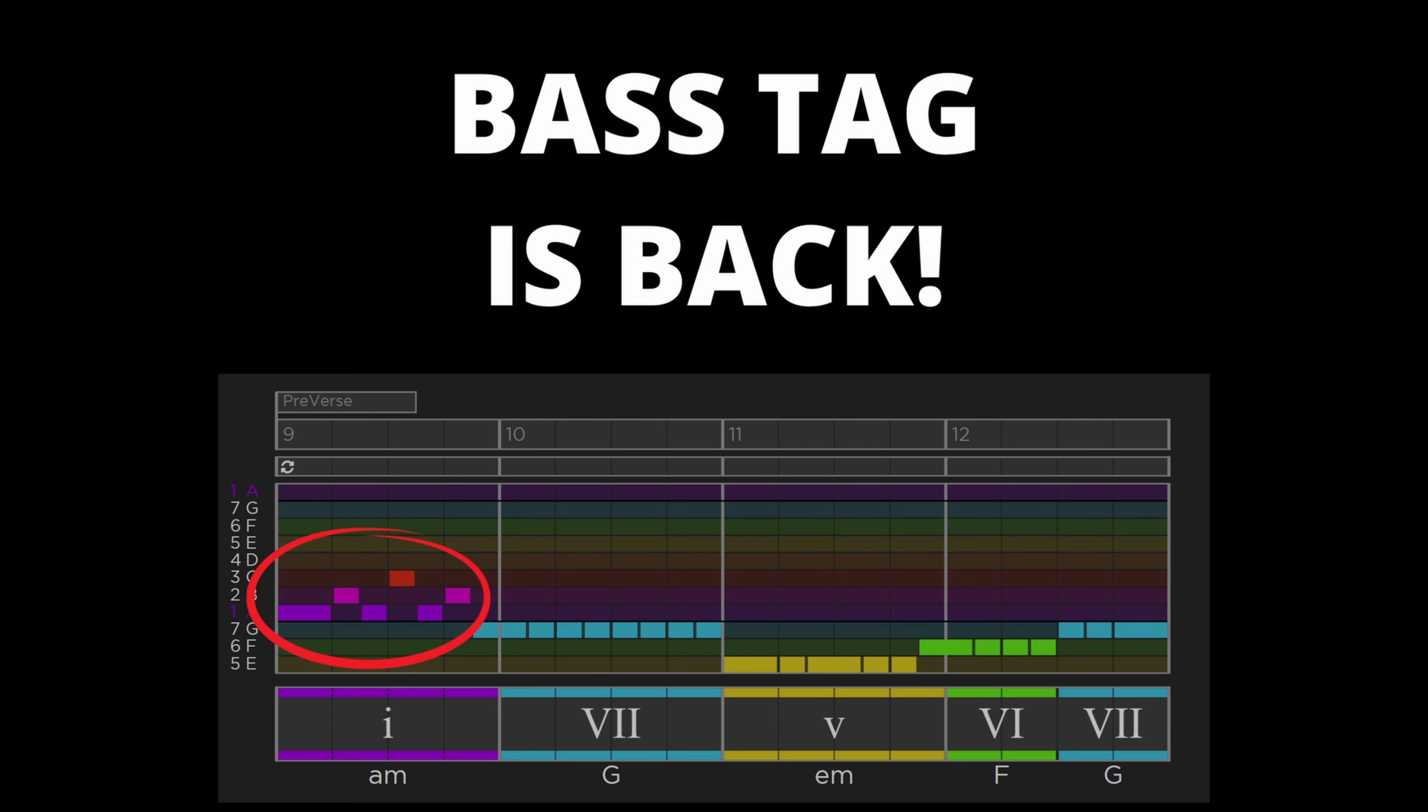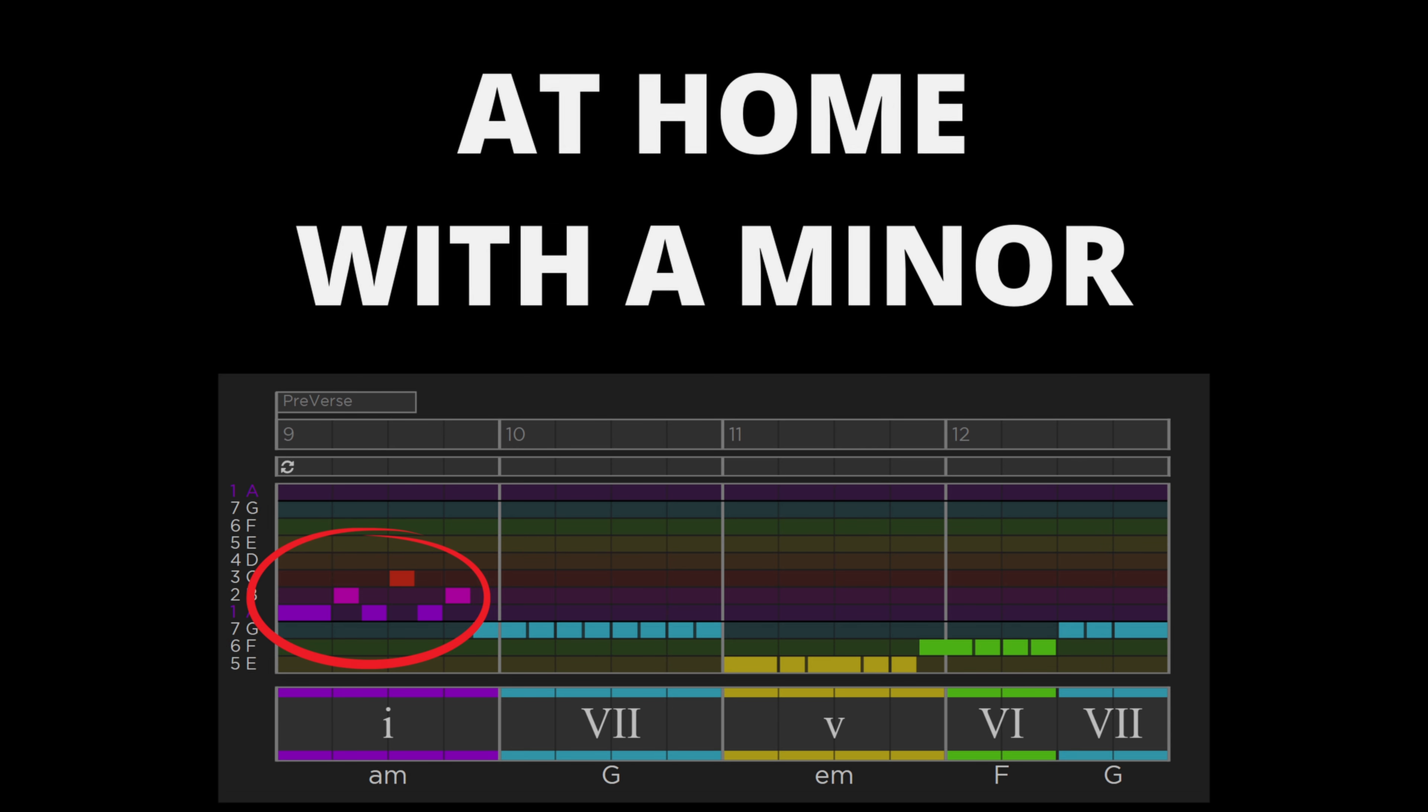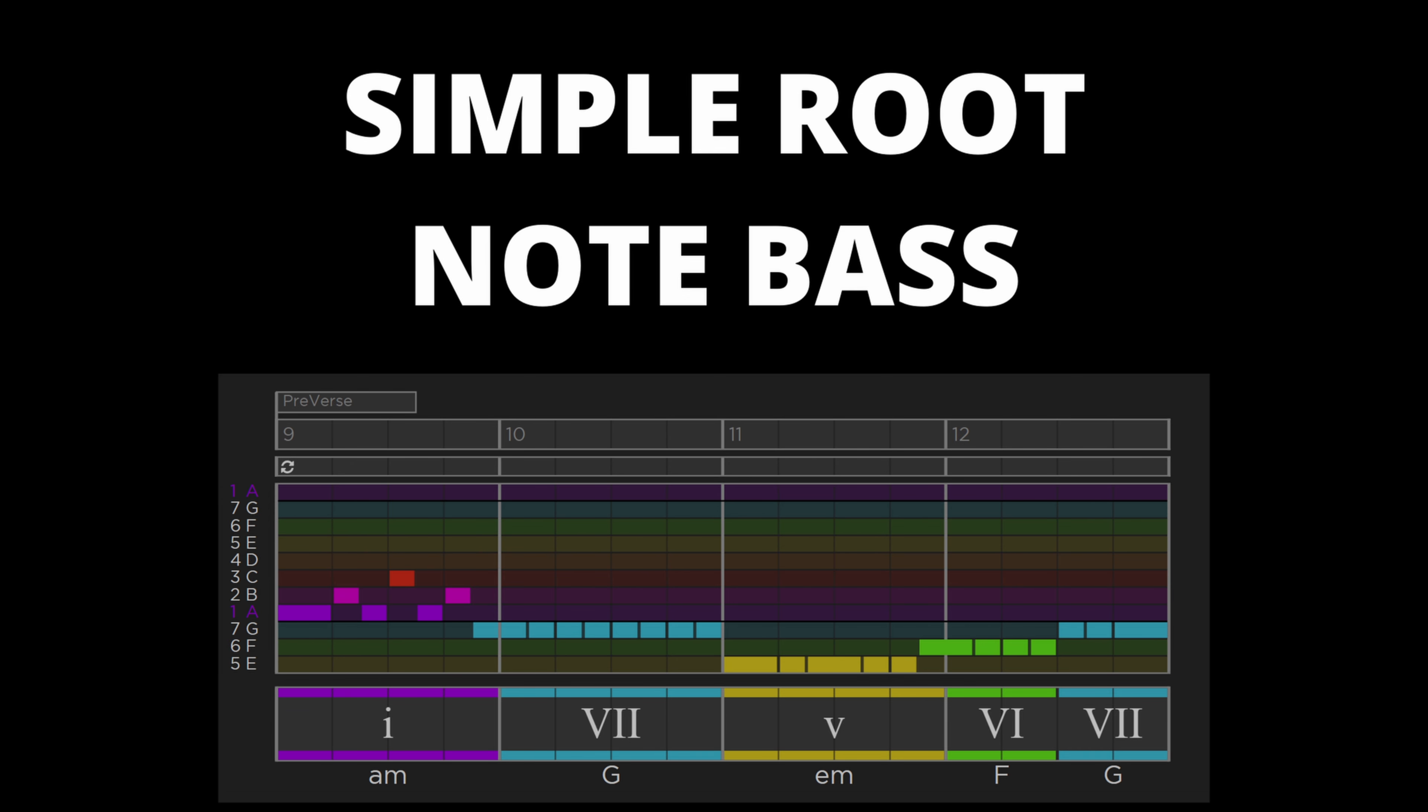Speaking of bass, here in the pre-verse it reprises the tag that I mentioned in the previous section. This also happens at the same time as we hear the A minor chord, another hint that we are at home with A minor. Other than the bass tag over A minor, the bass simply follows the root notes of the underlying chords here.